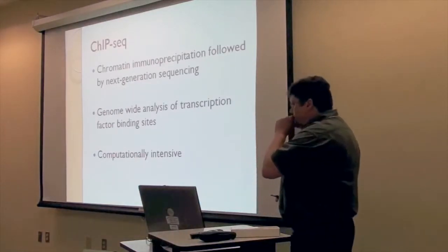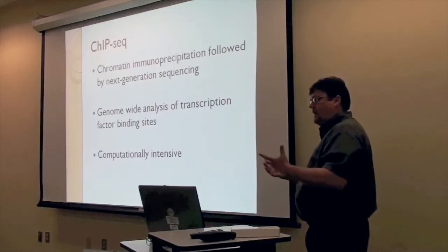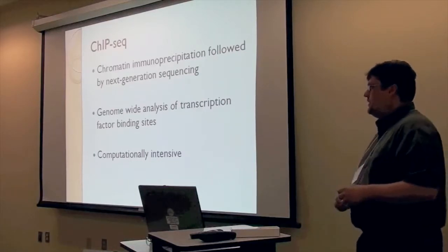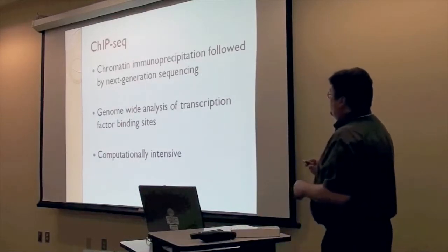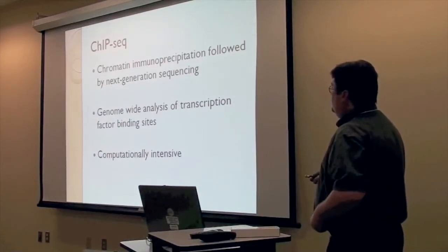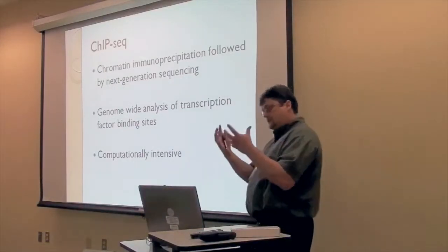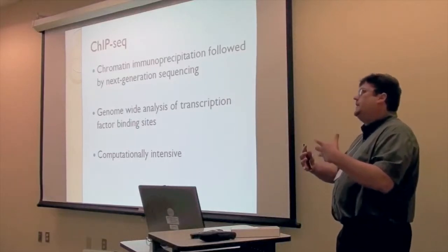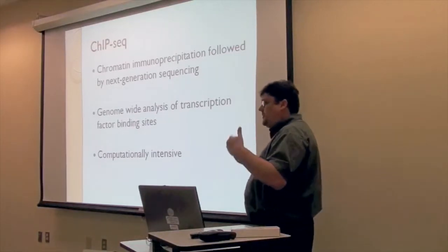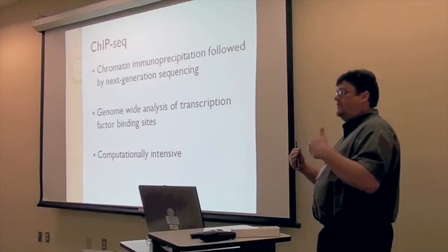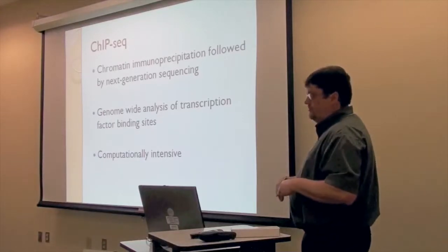Going through the literature, I realized it would be very nice to, on a global genomic scale, identify target genes for this transcription factor. There's a technique called ChIP-seq — chromatin immunoprecipitation followed by next-generation sequencing. Chromatin immunoprecipitation is where you fix transcription factors bound to their binding sites on DNA, fragment that DNA, isolate it, reverse the cross-links, and then using PCR look to see if particular fragments are enriched in your sample.